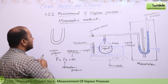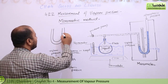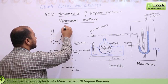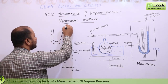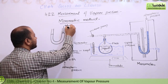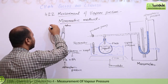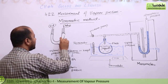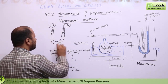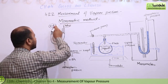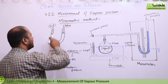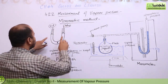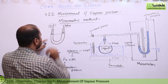In the manometer, there are two limbs. If the mercury is equal on both sides, that means the atmospheric pressure from one side and the vapor pressure from the other side are equal to each other — because both limbs appear as a straight line, indicating equal pressure on both sides.